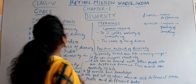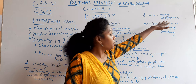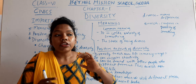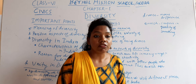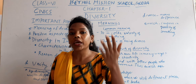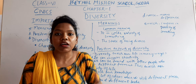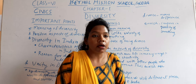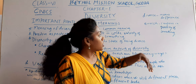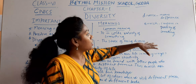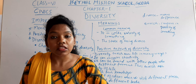The word diversity comes from 'diverse,' which means difference. If we look at our surroundings — in our house or environment — we can see different buildings, some small, some big, some of different colours. We can see different clothes, different colours of clothes, different people — some small, some big, some fair, some dark. These different people and things create a variety, and that variety is called diversity.